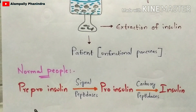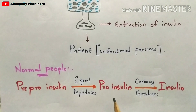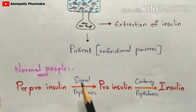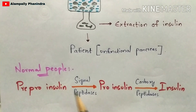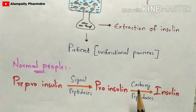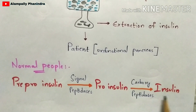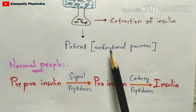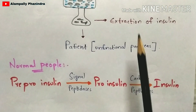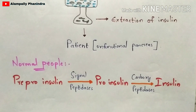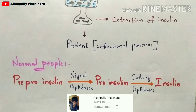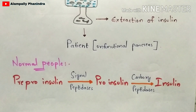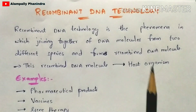In normal people whose pancreas is functional, pre-proinsulin is converted into proinsulin, and proinsulin is converted into insulin. Signal peptidase is the enzyme that helps convert pre-proinsulin to proinsulin, and carboxypeptidase is the enzyme that converts proinsulin to insulin. But for patients whose pancreas is non-functional, rDNA technology is used to produce insulin, which is then injected into the patient to maintain glucose levels and help them survive.